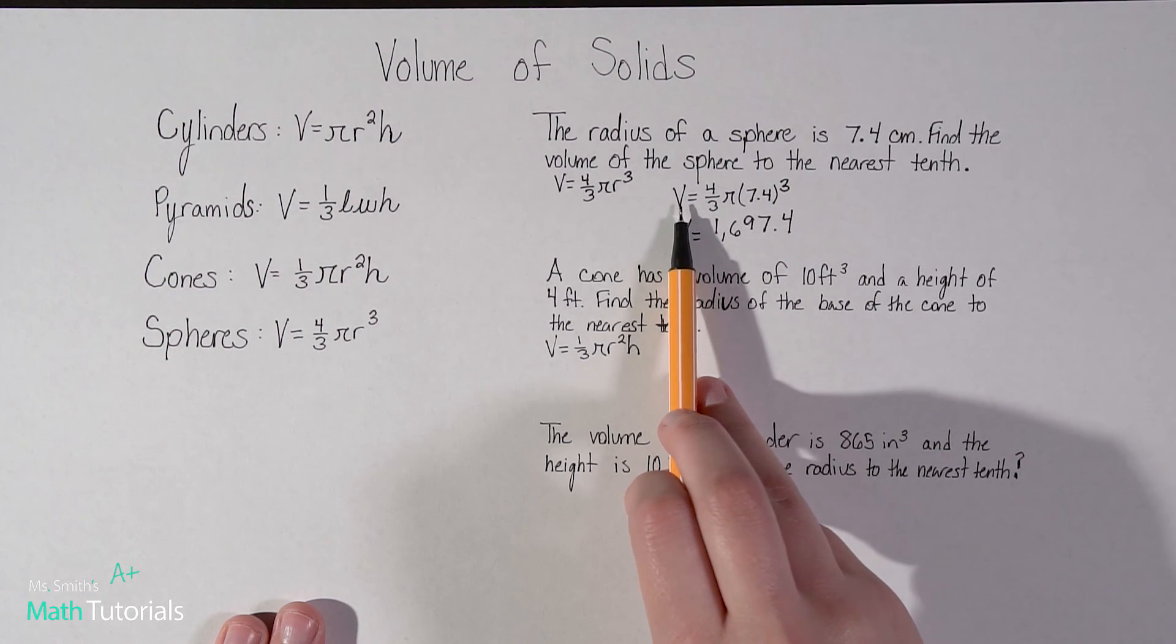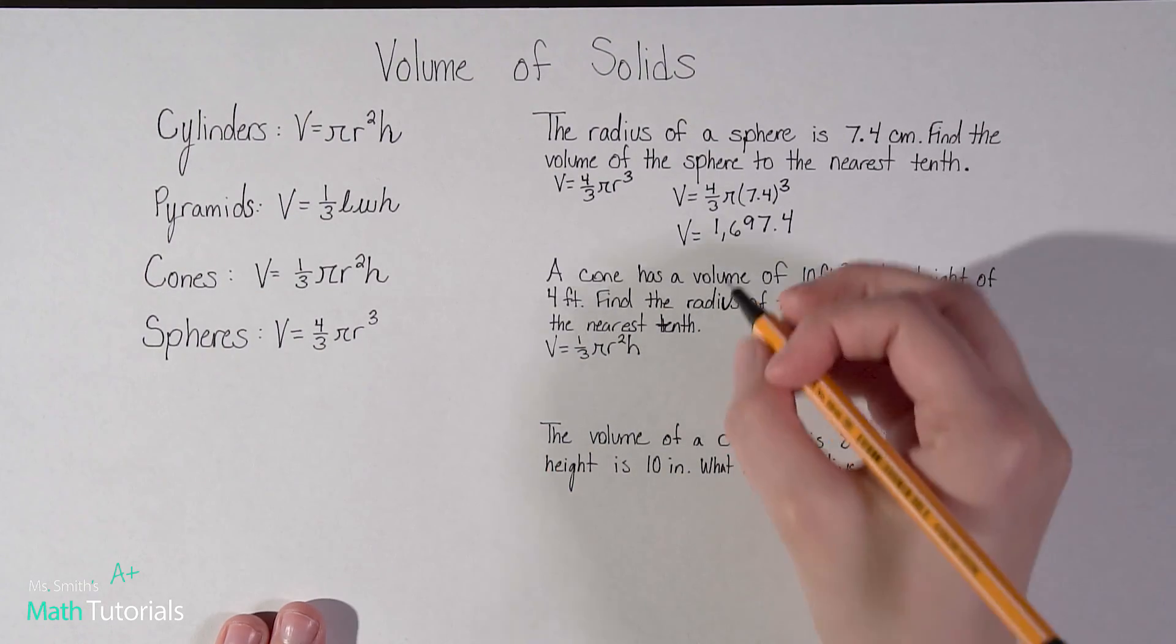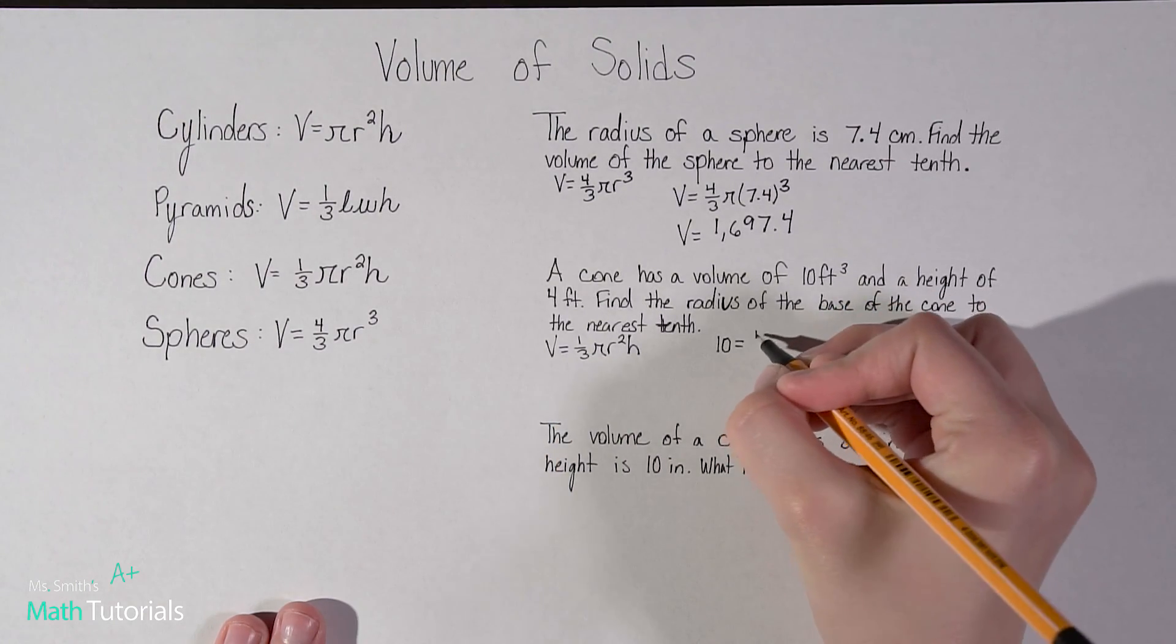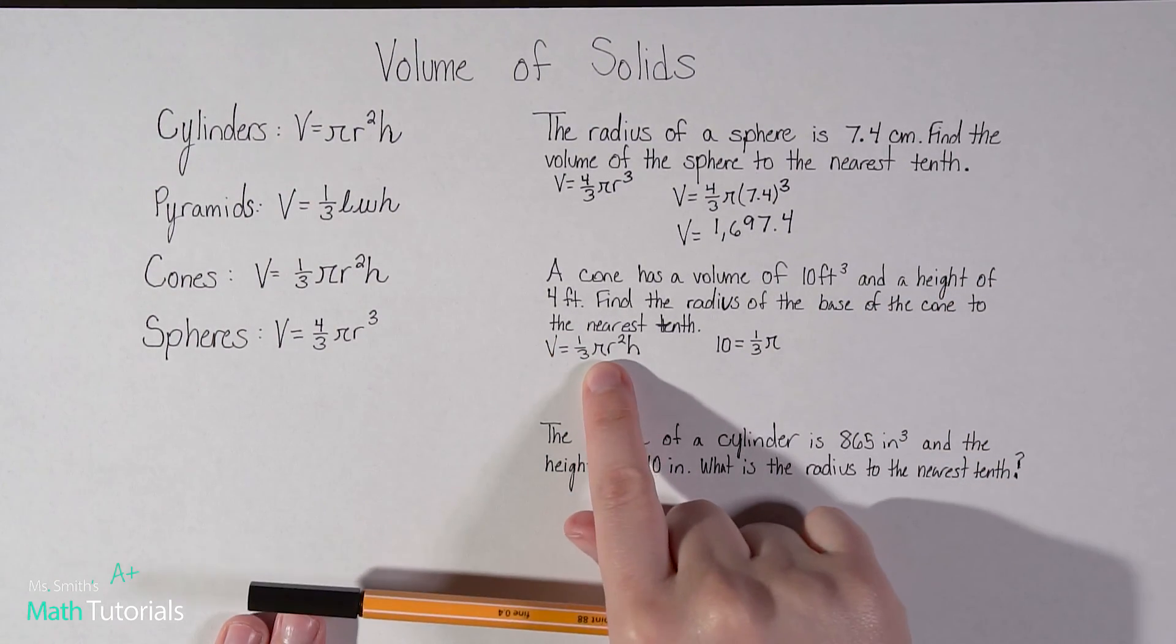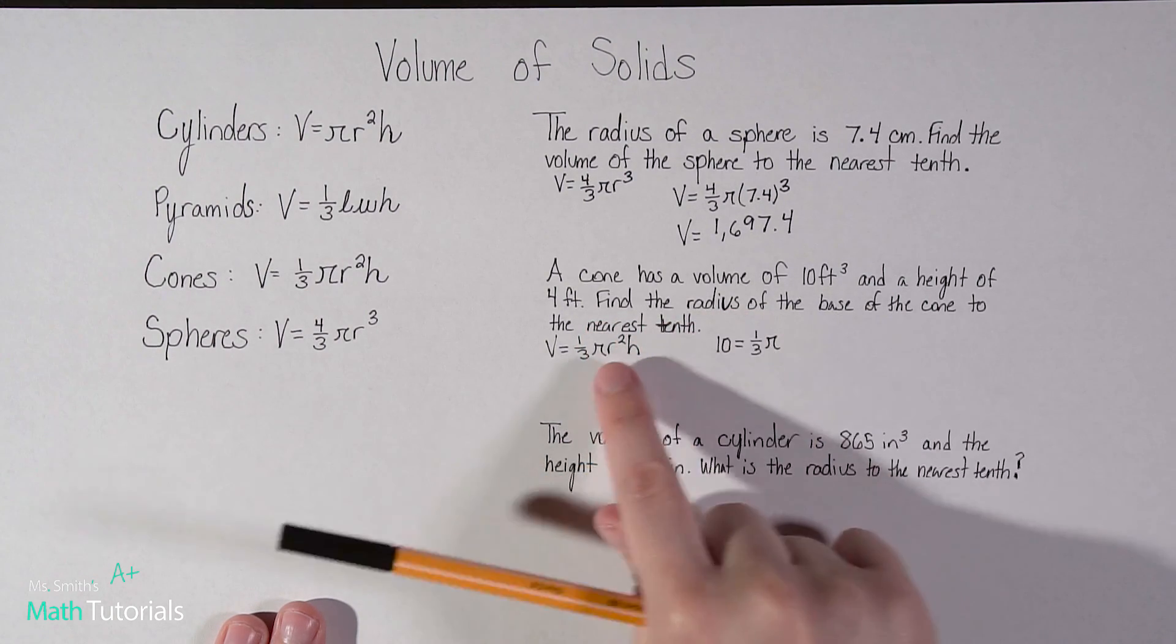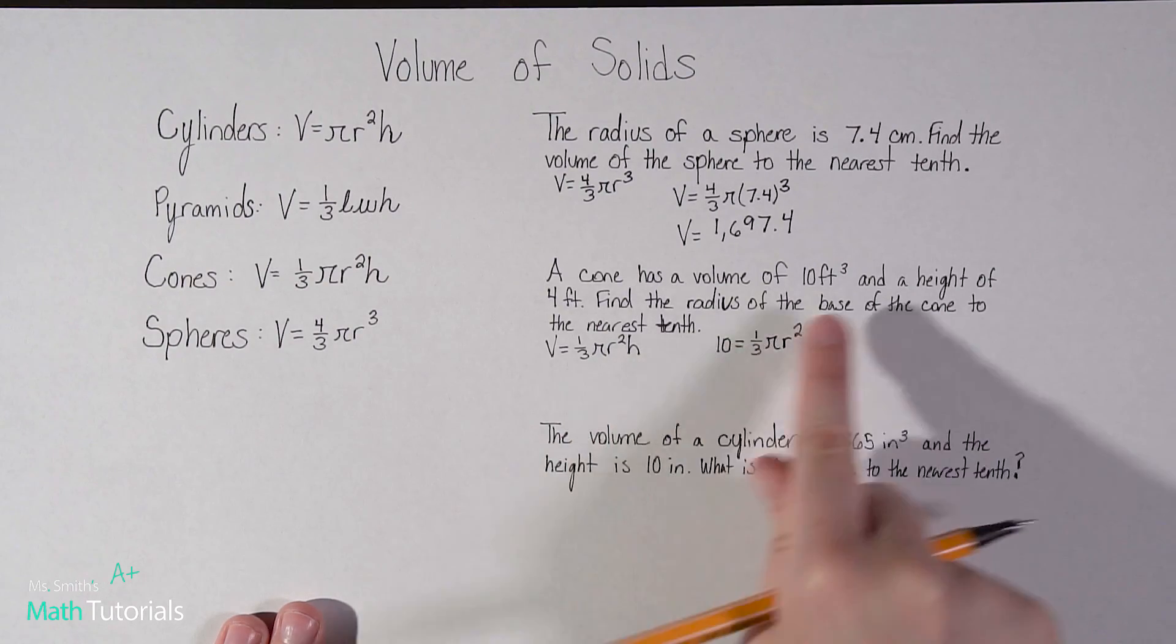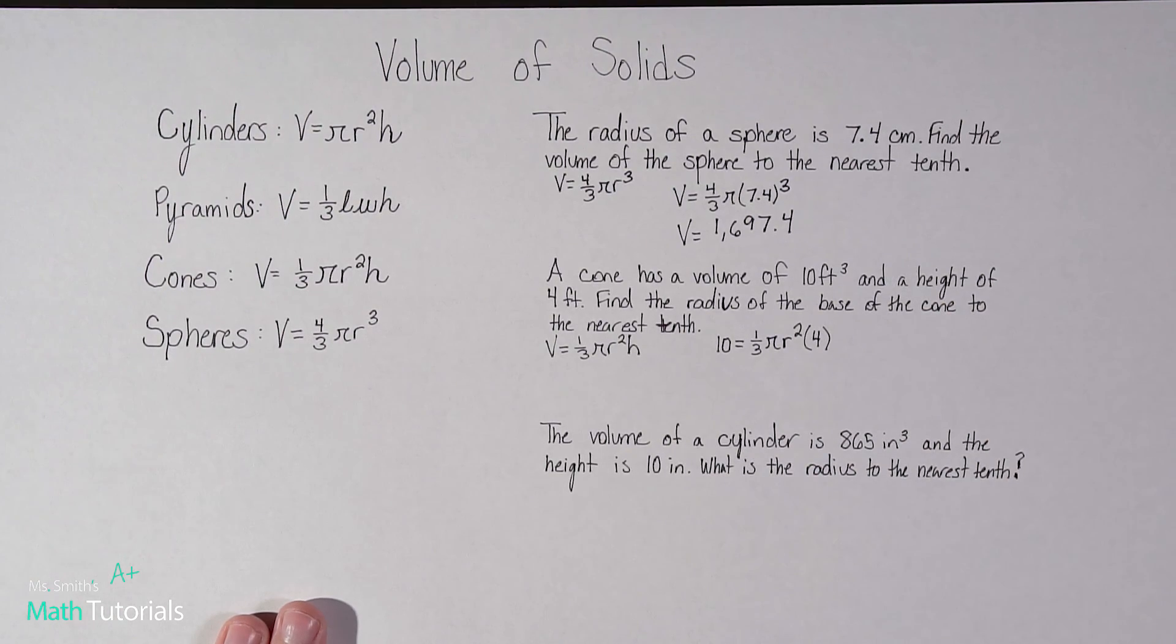And it tells us the volume. So before up here, we were solving for V, which kind of made it easy. Now it's telling us V. So we're going to have to work backwards a little bit. So V is 10. And then I've got my one third. I've got my pi. And then I've got my radius. Does it tell me the radius? No. Look, that's what I'm searching for. Find the radius. So R is going to be what I'm trying to find. So I'm just going to leave that as R squared. And H. Does it tell me the height? Yes. It says the height is four feet.